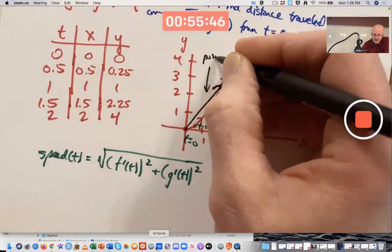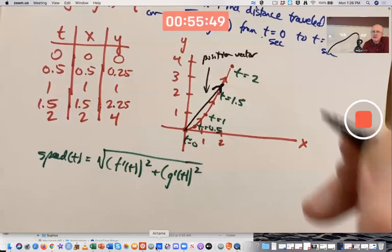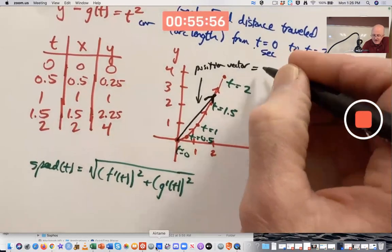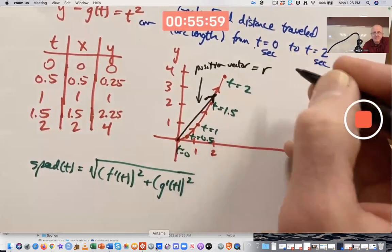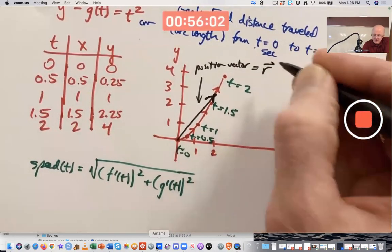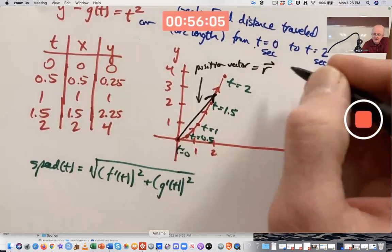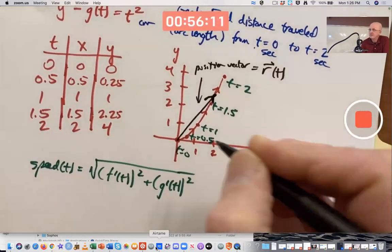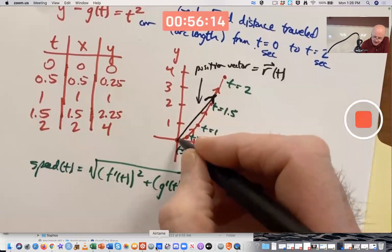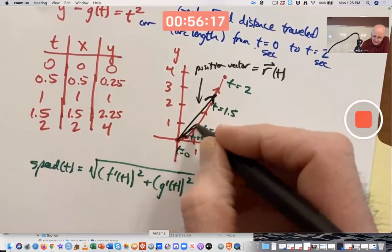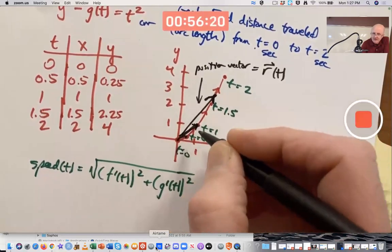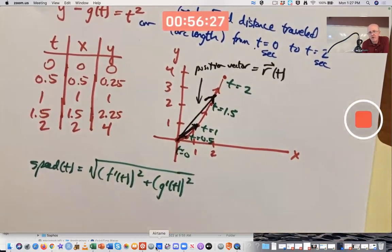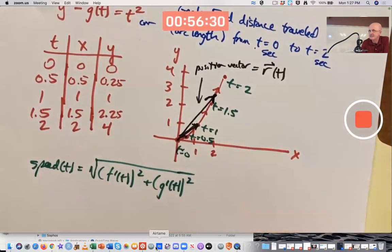Position vector for the motion at a certain moment in time. And the standard kind of notation for it is an R with a little half arrow above it of T. It does depend on what T is. It changes over time. If time is a half, it's a small vector like this. If time is one, it's a little bit bigger vector about like that. It gets longer as time goes by. And in fact, it's rotating somewhat too. The angle it's making with the positive x-axis keeps getting bigger.